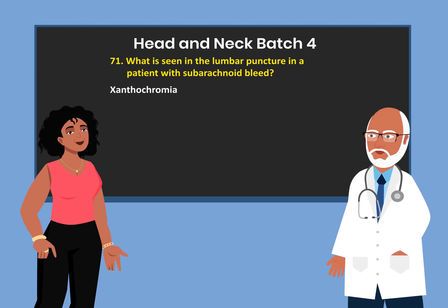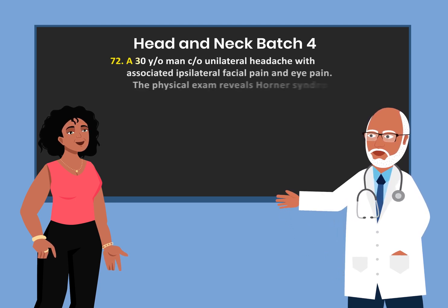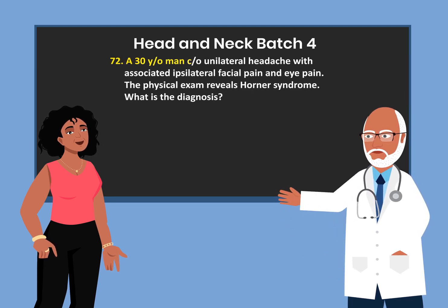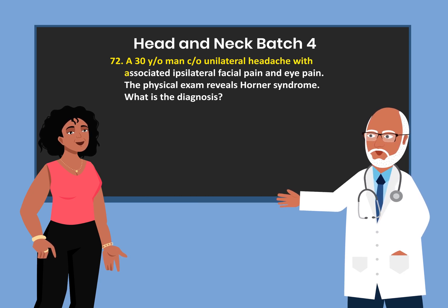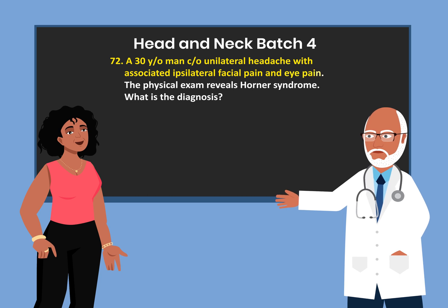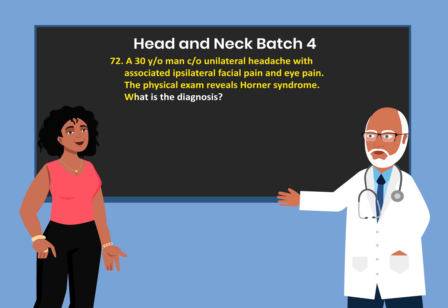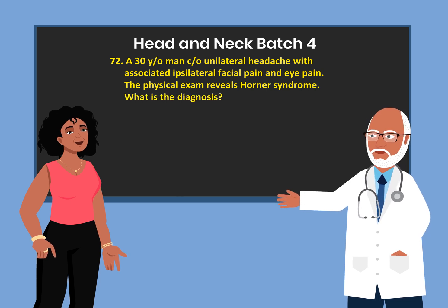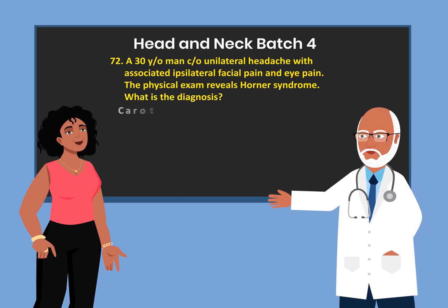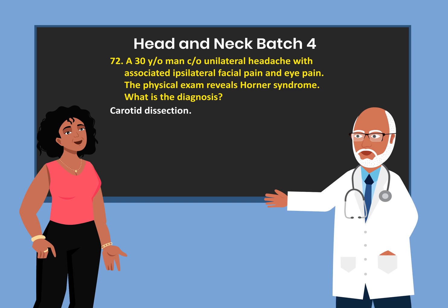What is seen in the lumbar puncture in a patient with suspected subarachnoid bleed? Xanthochromia. A 30-year-old man complains of unilateral headache with associated ipsilateral facial pain and eye pain. Physical exam reveals Horner's syndrome. What is the diagnosis? Carotid dissection.